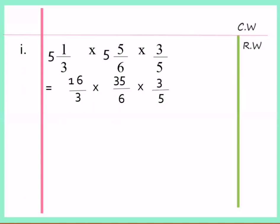Now we have 3 fractions. According to the rule, we will multiply all numerators and all denominators: 16 multiply 35 into 3. After multiplication, we get 1680 as numerator and 90 as denominator. Students, you can see this fraction can be reduced by 10 because both numbers have 0 at the last place. If we reduce both numbers by 10, we get 168 as numerator and 9 as denominator.